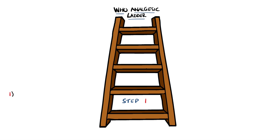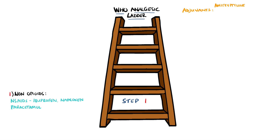At the bottom of the ladder, we have the non-opioid medications. Examples include NSAIDs like ibuprofen and naproxen, and paracetamol, or acetaminophen in the US. Adjuvants are drugs given alongside the specific analgesics — things such as antidepressants like amitriptyline, anticonvulsants like gabapentin and pregabalin, anxiolytics like diazepam, or corticosteroids like dexamethasone. These can be present at any step of the ladder.